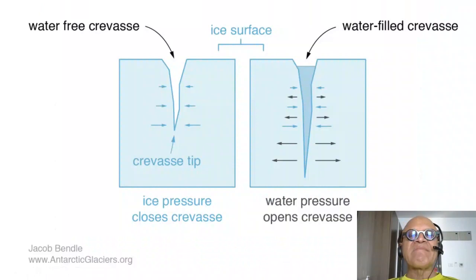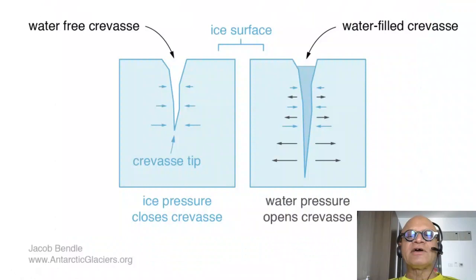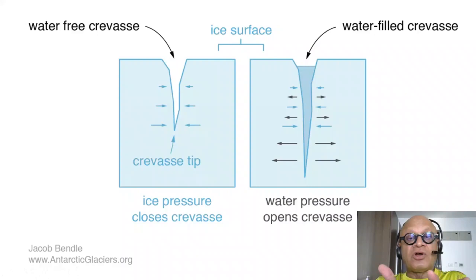Just to run through some schematics of the processes: crevasses form typically because of stretching. You can see several crevasses in this iceberg hitting the water in Antarctica. A water-free crevasse then gets filled with water, which freezes and begins to pry it open. Ice pressure can close the crevasse if it's not filled with water, but if it is filled with water, that water freezes — since it's now inside the cold glacier — and begins to pry the crevasse open.